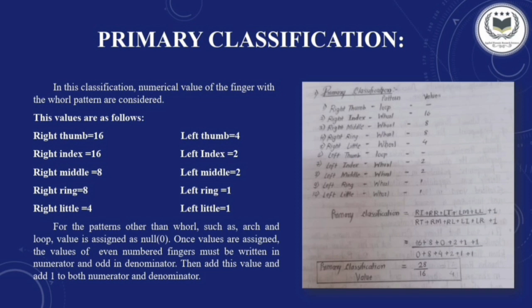Primary classification equals numerator upon denominator, where the numerator consists of right index, right ring, left thumb, left middle, and left little finger; and the denominator consists of right thumb, right middle, right little, left index, and left ring. We place the value of each finger, add those values, then add 1 to both numerator and denominator. After complete addition, we get the primary classification value. If whorl patterns are present in all fingers, the value is 32/32. If all patterns are loop or arch, the value is 1/1.